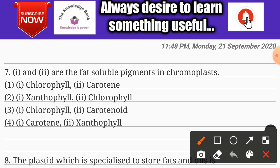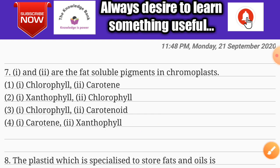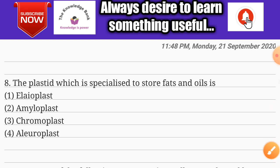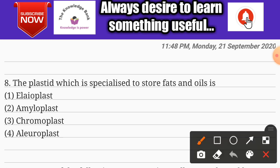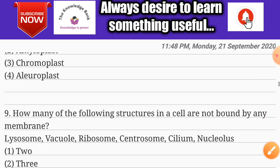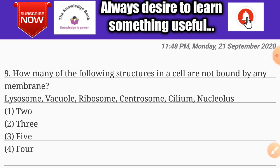Question number eight: the plastid which is specialized to store fats and oils is — options are elaioplast, amyloplast, chromoplast, and elaioplast. The correct answer is option one: elaioplast.